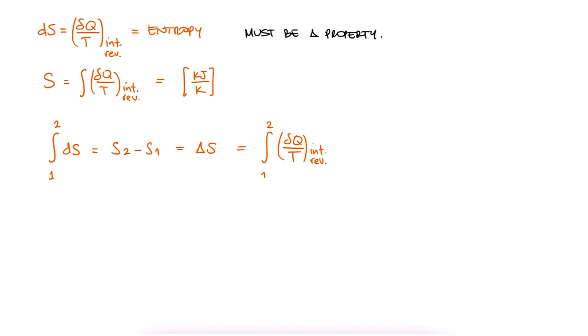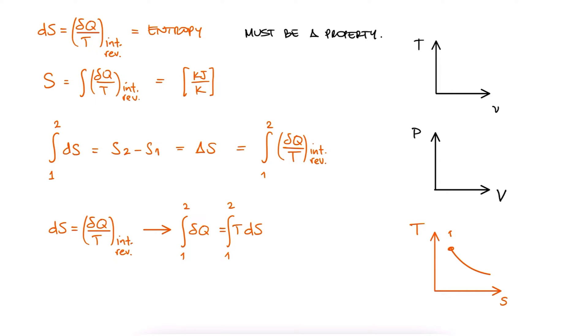Now, if we rearrange the ds equation, we can write delta q equal to tds and integrate it. So, just like we've used tv diagrams and pv diagrams in the past, we'll now start to use ts diagrams. Because if we have an internally reversible process from 1 to 2, we can take the area under the curve to determine the heat transfer. This is just like using the work expression w equal to the integral of pdv.